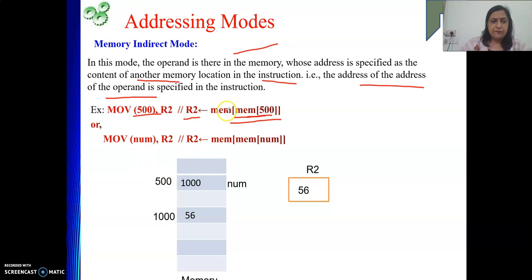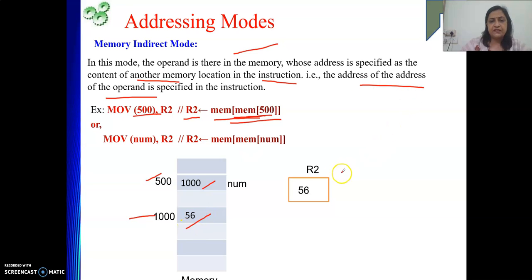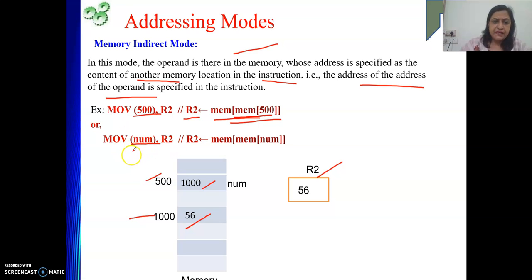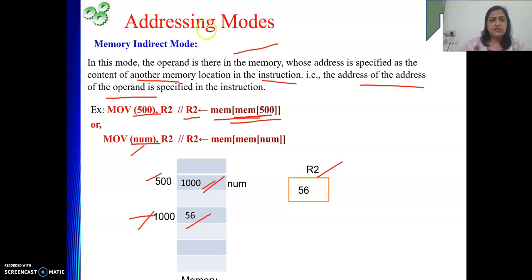Another way of representing this is by symbolic name — instead of 500 we can write NUM, LOC, or any variable name. So MOV (NUM), R2: NUM will be replaced by a number representing one address, at that address we get another address, and then at that address we get our data. So indirectly you are given the address of the memory operand. This is memory indirect addressing mode.